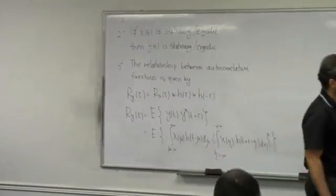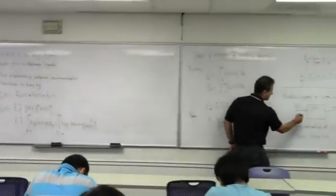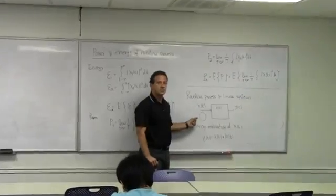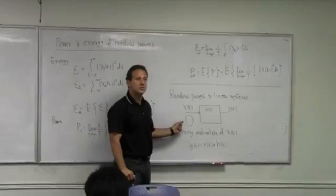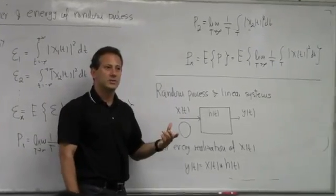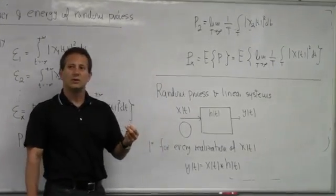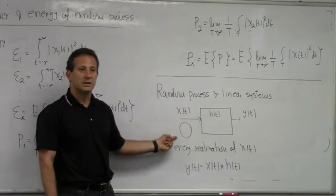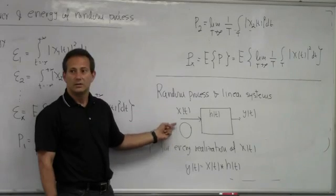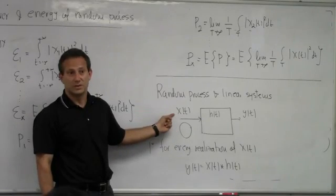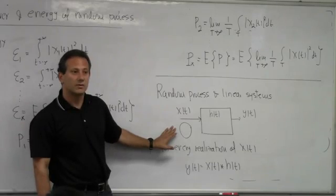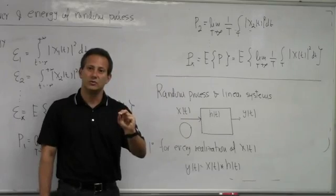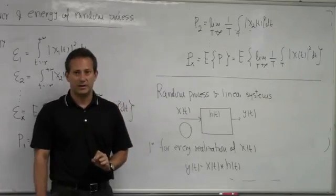One thing that is missing that we need to define is this bottom piece. I need to understand how do I characterize my random process in a frequency domain. We know how to do that for deterministic signals — by taking the Fourier transform of the signal itself. So that part is missing here for the random processes. I need to understand what sinusoidals I need to use to build a particular random process.